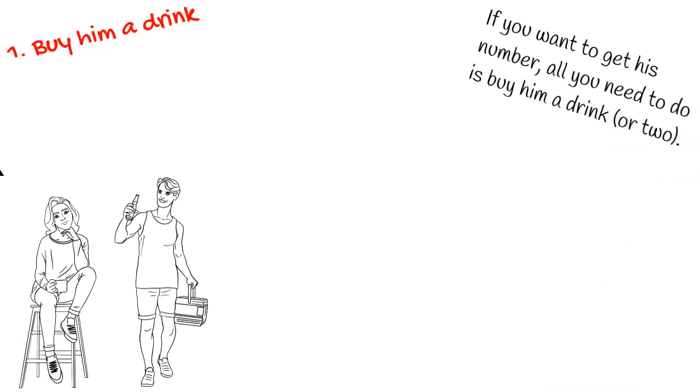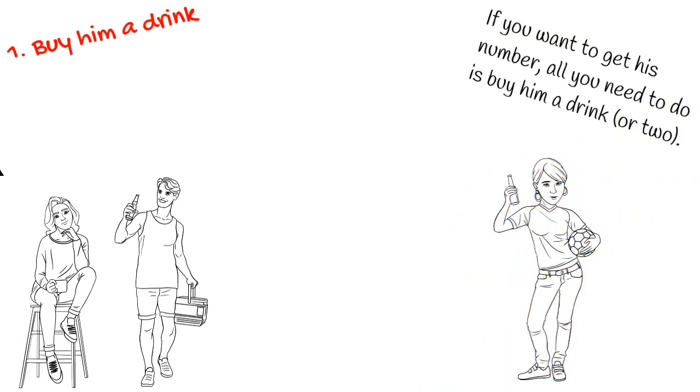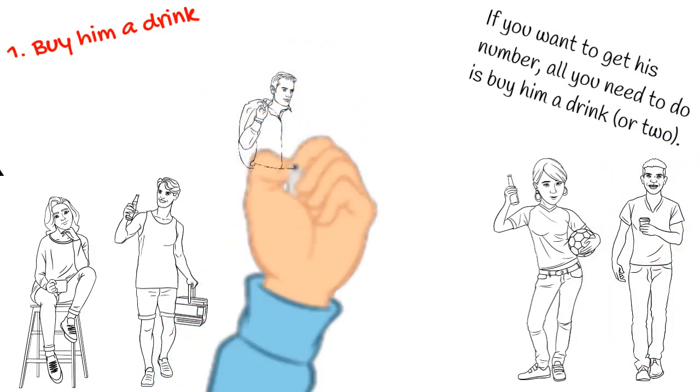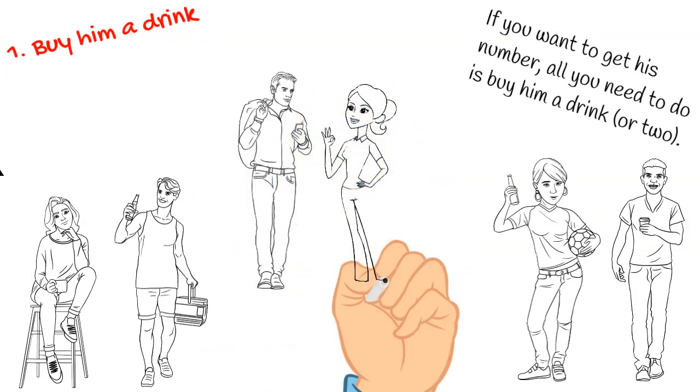All you need to do is buy him a drink or two. When he sees how confident you are, and more importantly, when he sees that you're interested in him, he will give you his number in no time. Just buy him a drink, smile seductively from the other side of the bar, and wait for his guaranteed approach.